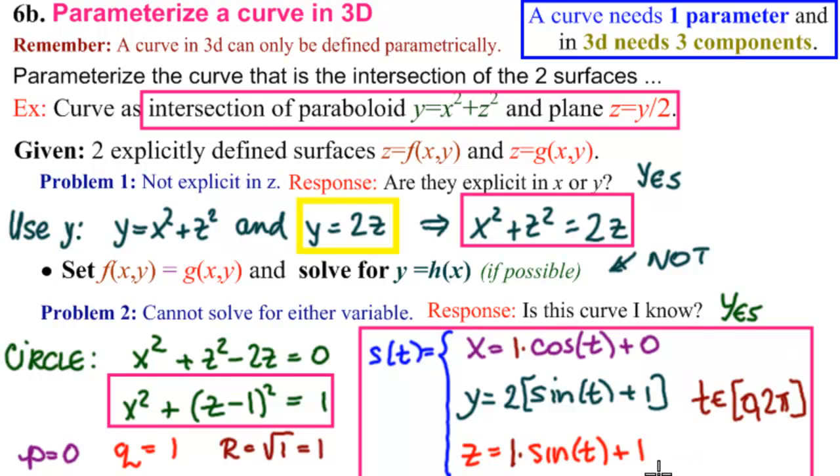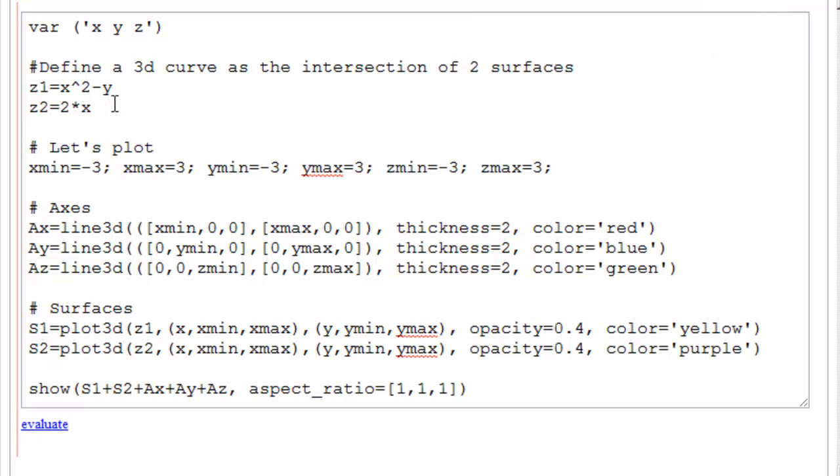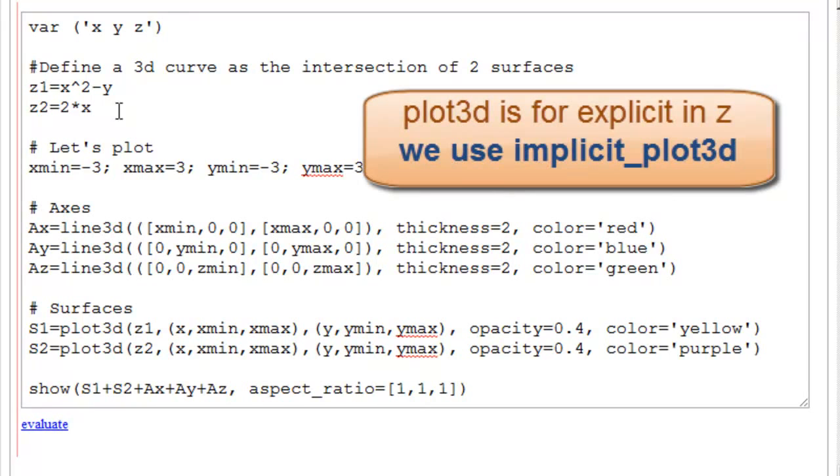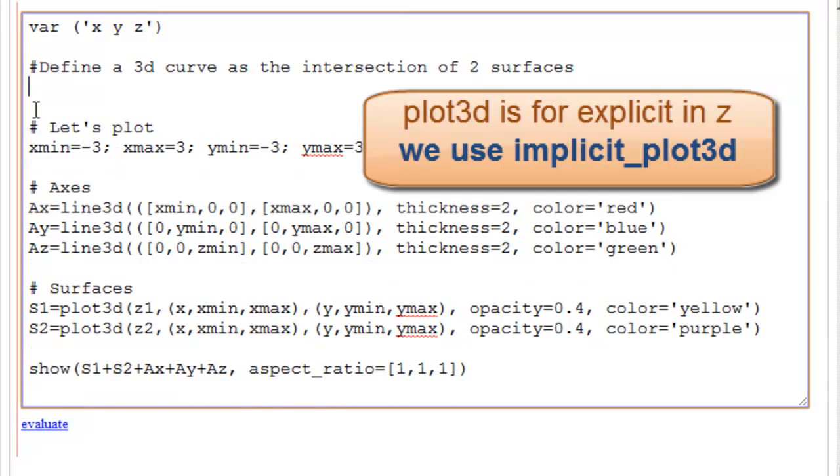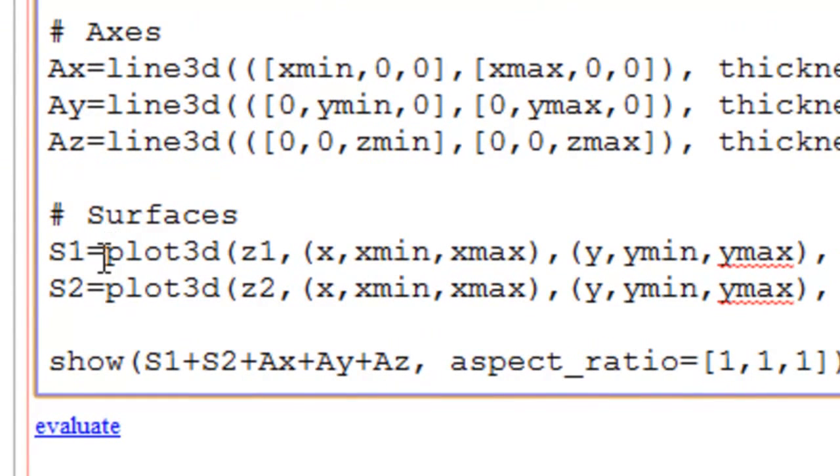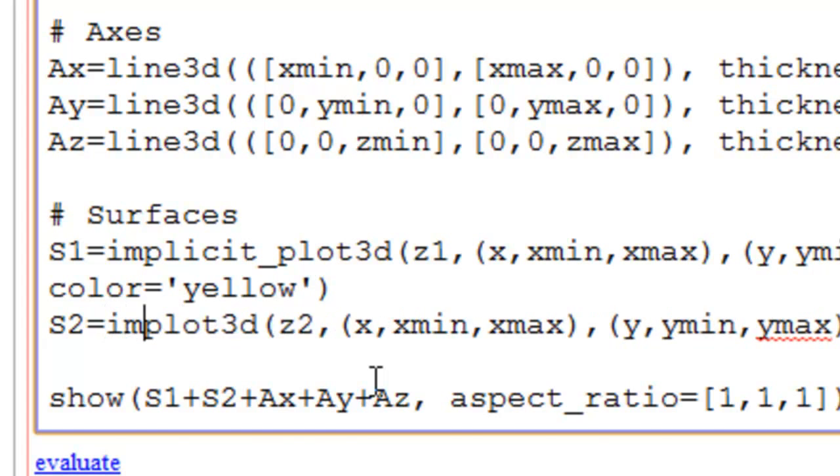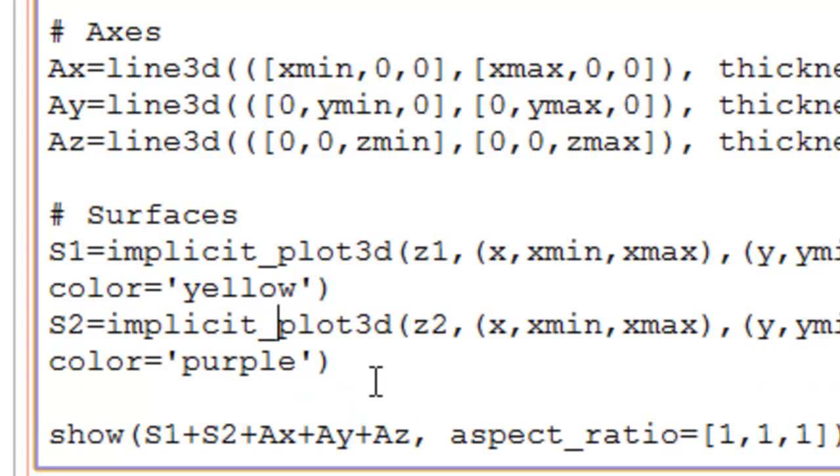So here we are in SAGE with our standard plot data for two explicitly defined surfaces, z1 and z2. The trouble is that none of these programs will do anything except explicit in z. So we're going to have to erase this part and say, not explicit in z, so we must use implicit plots. So down here, we're going to have to add implicit and below that implicit.